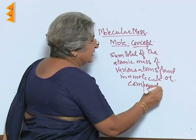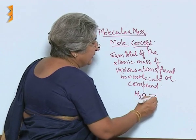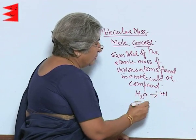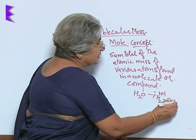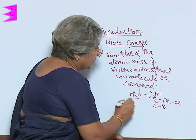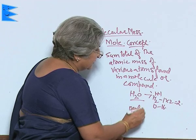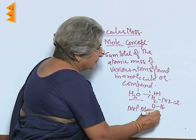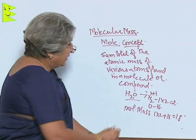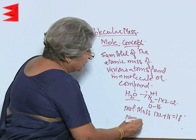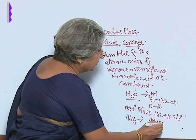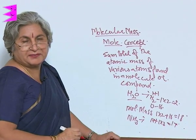For example, if we take the case of water: the atomic mass of hydrogen is 1, so H₂ gives 1×2 = 2, and the atomic mass of oxygen is 16, so the molecular mass of water becomes 1×2 + 16 = 18. In the case of ammonia, the atomic mass of nitrogen is 14, plus 1×3, so this becomes 17.